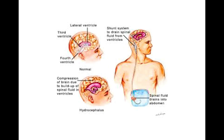Looking at these pictures: in the normal individual, the size of the lateral ventricles and the third ventricle are normal, and the brain tissue is normal. Whereas in hydrocephalus, there is compression of the brain tissue due to the buildup of spinal fluid in the ventricles, causing an enlarging ventricular system and pressure over the brain tissue. Another picture shows the shunt surgery done on a patient with NPH.